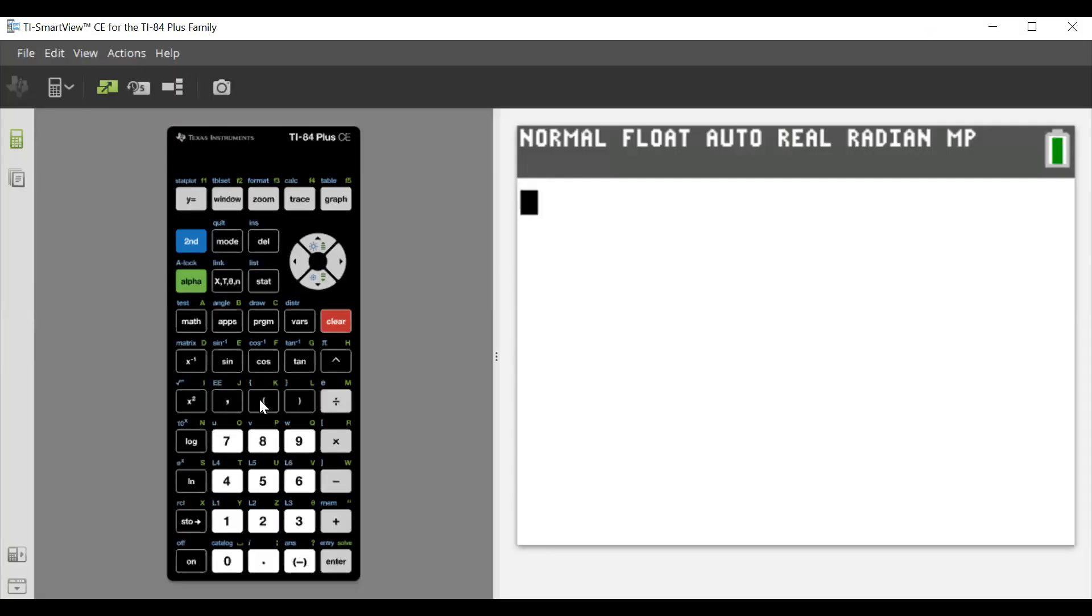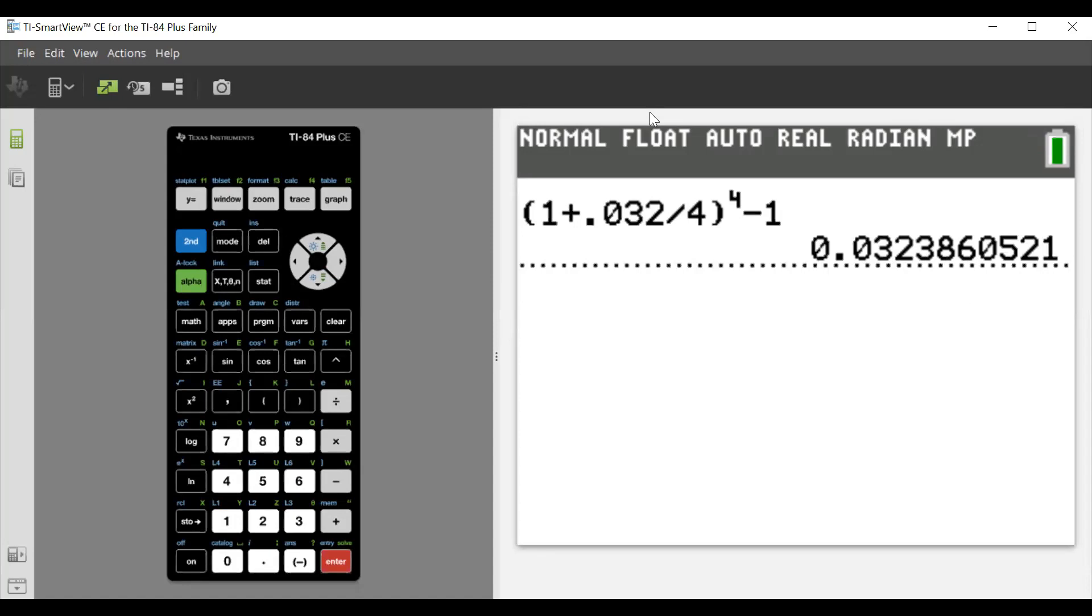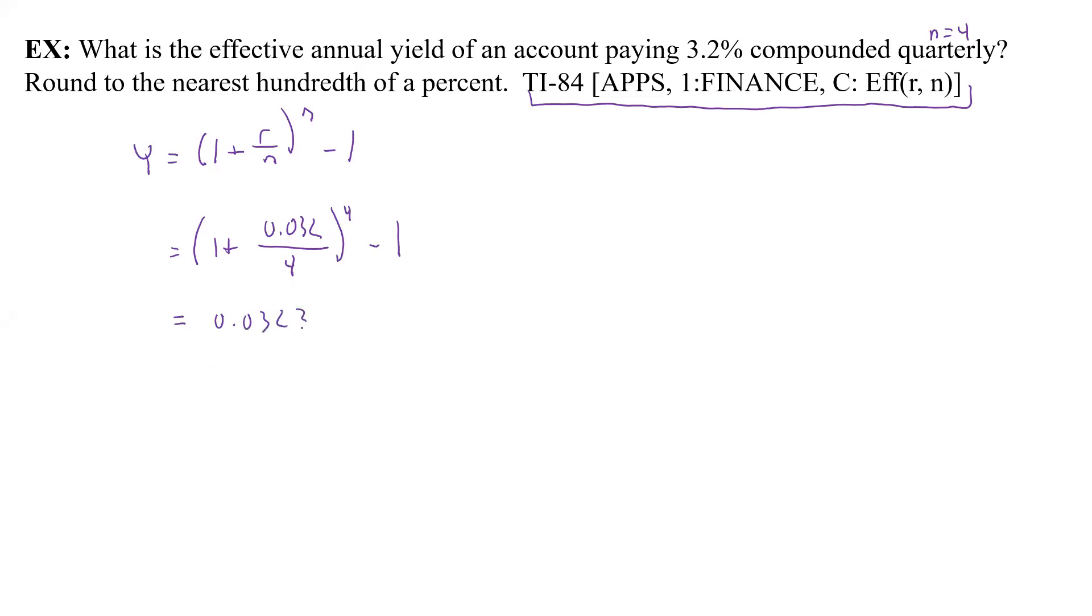Now we figure out what our yield is. We're going to take 1 plus 0.032 divided by 4 to the power of 4. Remember when you have that, we have to arrow down so we can get that. So we have minus 1, and the minus 1 is not in the power section. Then you enter and you get 0.032386. We want it to the nearest hundredth. If we convert that back to a decimal, we get 3.2, and that 3 is going to go up to a 4. That's 3.24%, and that's going to be our effective annual yield.